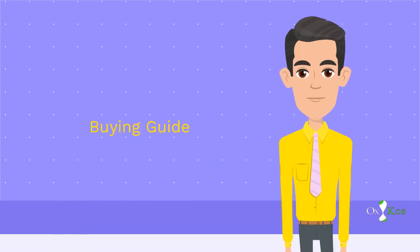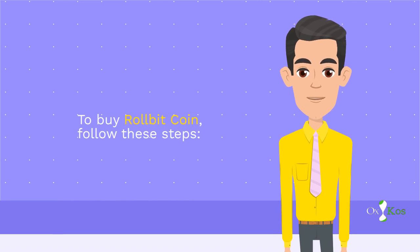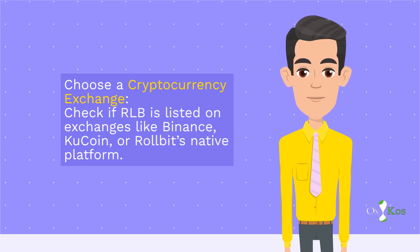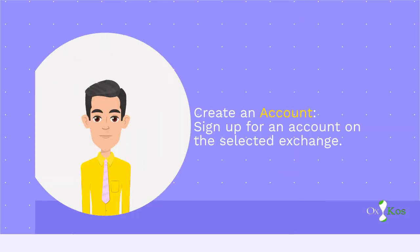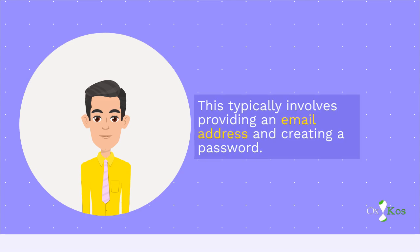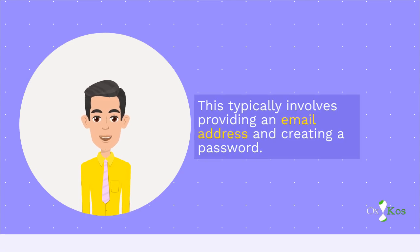Buying Guide: To buy RollBitcoin, follow these steps. Choose a cryptocurrency exchange — check if RLB is listed on exchanges like Binance, KuCoin, or RollBit's native platform. Create an account: sign up for an account on the selected exchange. This typically involves providing an email address and creating a password.